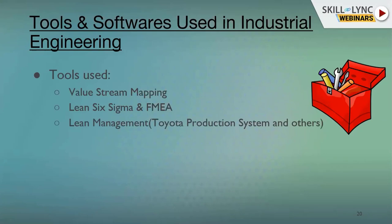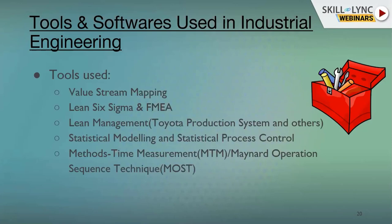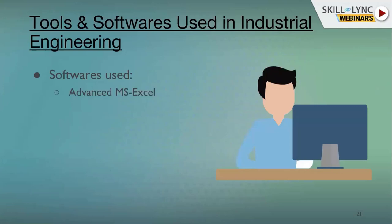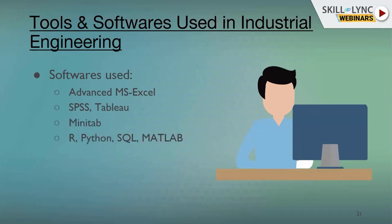Other tools include lean management and the Toyota Production System, statistical modeling and statistical process control, time measurement using the MTM and Maynard technique, total productive maintenance (TPM), value analysis and value engineering, and linear programming for optimization — such as flight scheduling and raw material planning. Software used includes advanced MS Excel, SPSS, Minitab, Python, SQL, MATLAB, AutoCAD, and CATIA for design purposes.